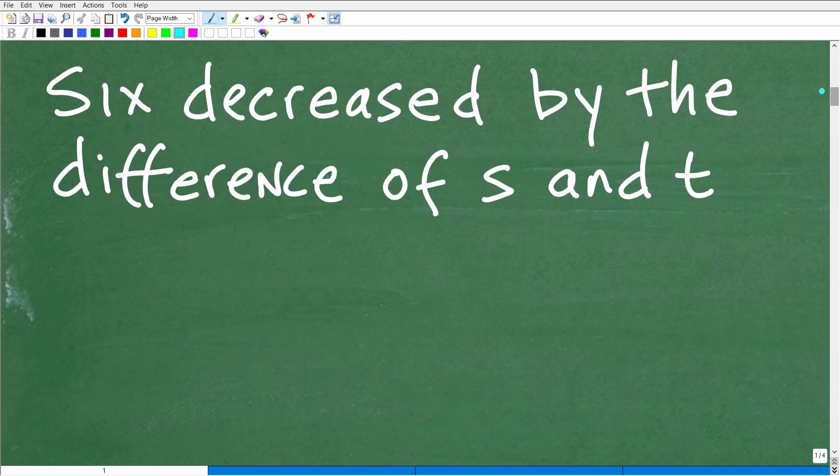So let's go ahead and get into this problem right now. So here we go. We have six decreased by the difference of S and T. So the first thing we want to do is make sure we have some sense of what these words mean. Decreased, right? So we have six.